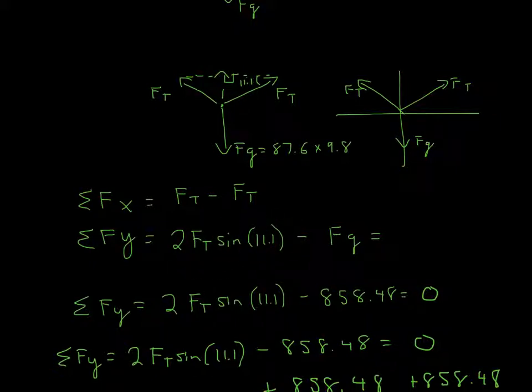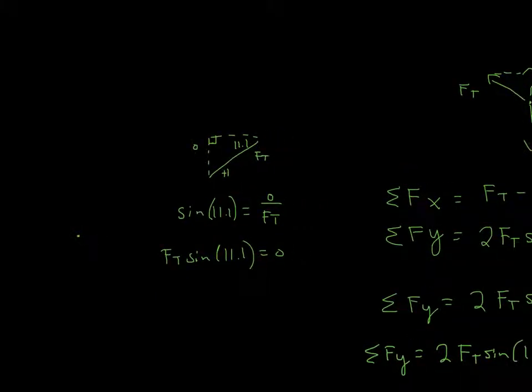How I get the sine 11.1 is right here. If you have the angle here, it would be opposite over hypotenuse. That would be sine. It's sine of 11.1 equals opposite, the opposite side, over tension, which is the hypotenuse.